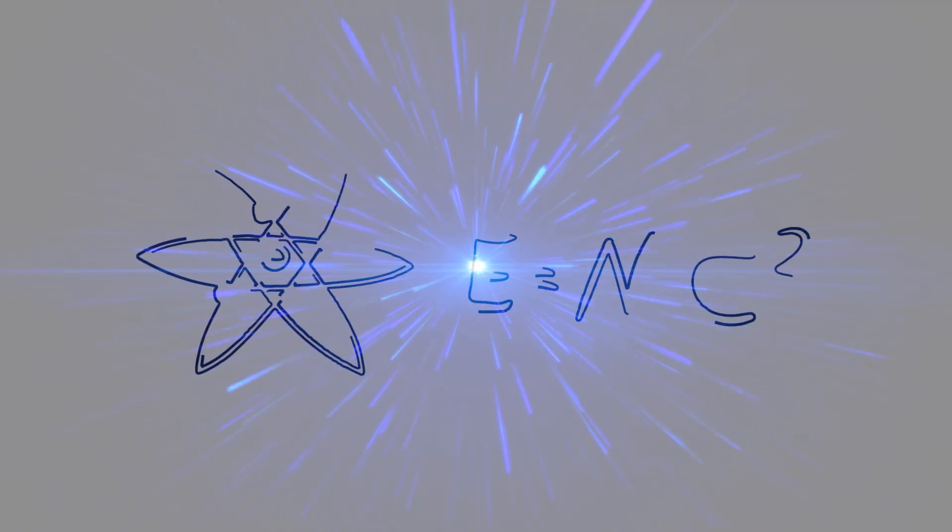A tachyon is a theoretical particle that always moves faster than the speed of light. Something that Einstein's equations say should be impossible. But here is the twist. Tachyons wouldn't just be fast. They would be infinitely fast in some situations. And their very existence would defy everything we know about physics.